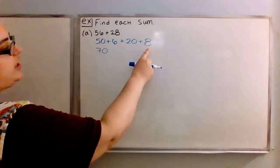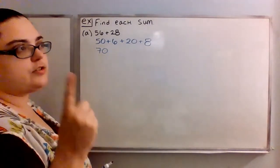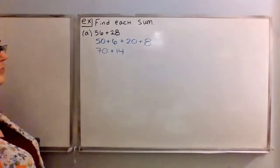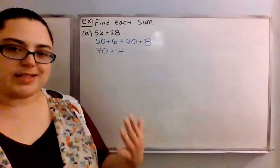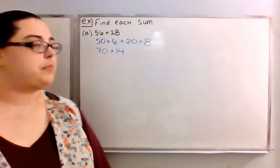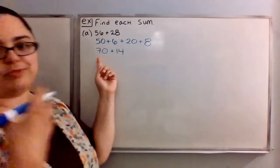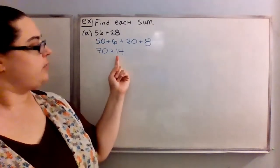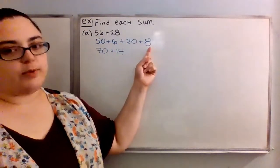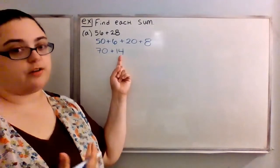And then 6 plus 8 — counting up: 8, 9, 10, 11, 12, 13, 14 — so I end up with 14. What's different about this example from the ones we've worked on in the past is that the 70 part is like what we would get before, but now what's different is we got a two-digit number when we added our one-digit numbers. When we added 6 and 8 together, we ended up getting a two-digit answer of 14.